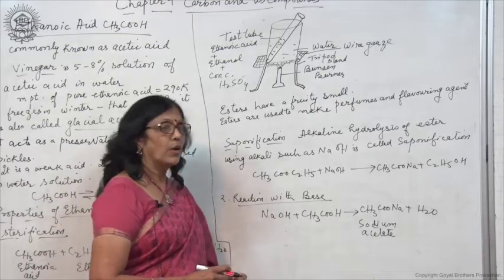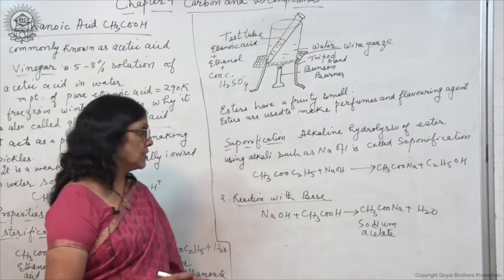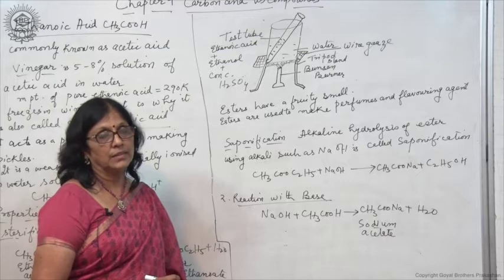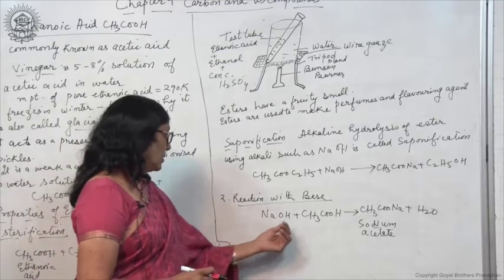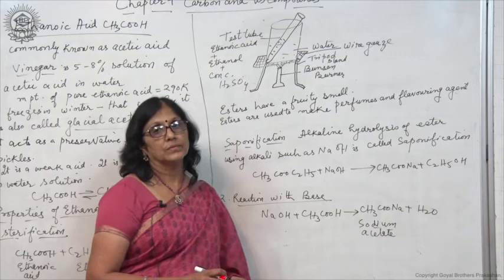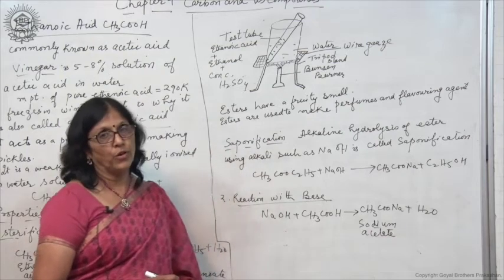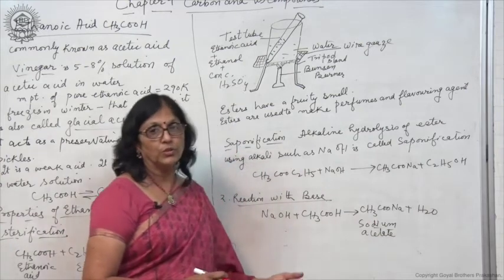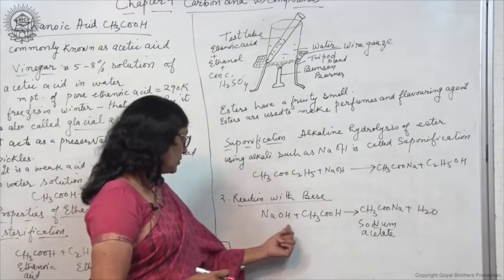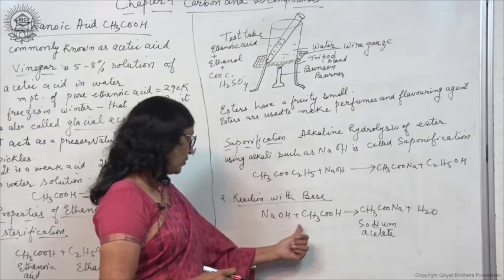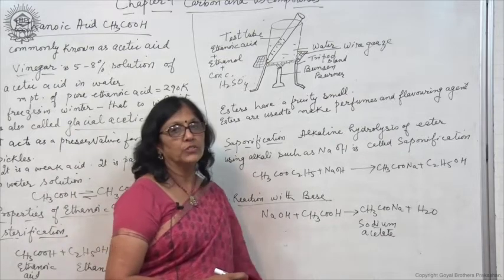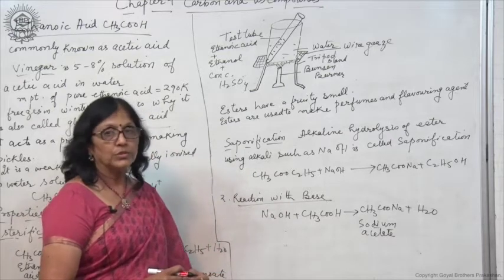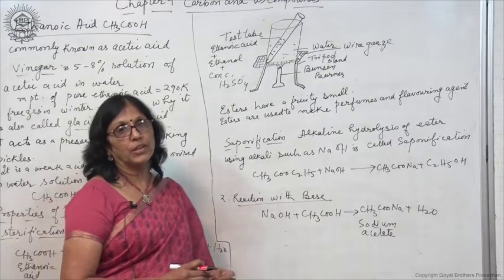Now let us discuss another property of ethanoic acid, its reaction with a base or alkali like sodium hydroxide. It reacts with sodium hydroxide to form the salt, sodium acetate or sodium ethanoate. See this chemical equation: NaOH plus CH3COOH gives CH3COONa plus H2O. You should practice writing these chemical equations.